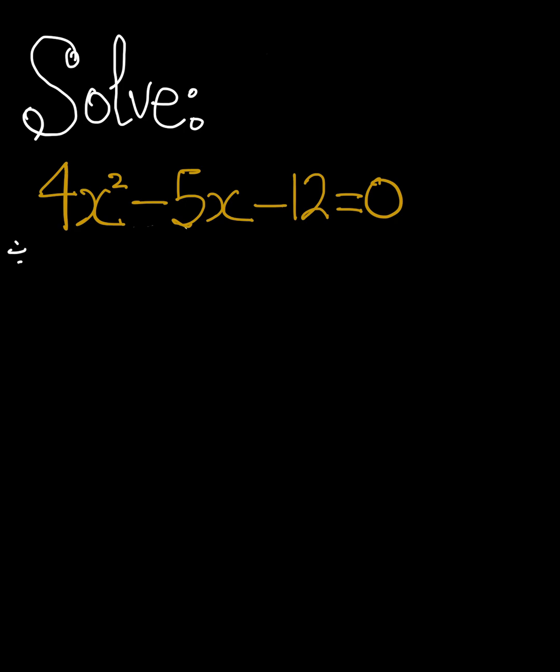...we'll always divide this number by everything. So 4x squared, we'll divide by 4 minus 5 over 4x minus 12 over 4 is equal to 0 over 4. When we do that...